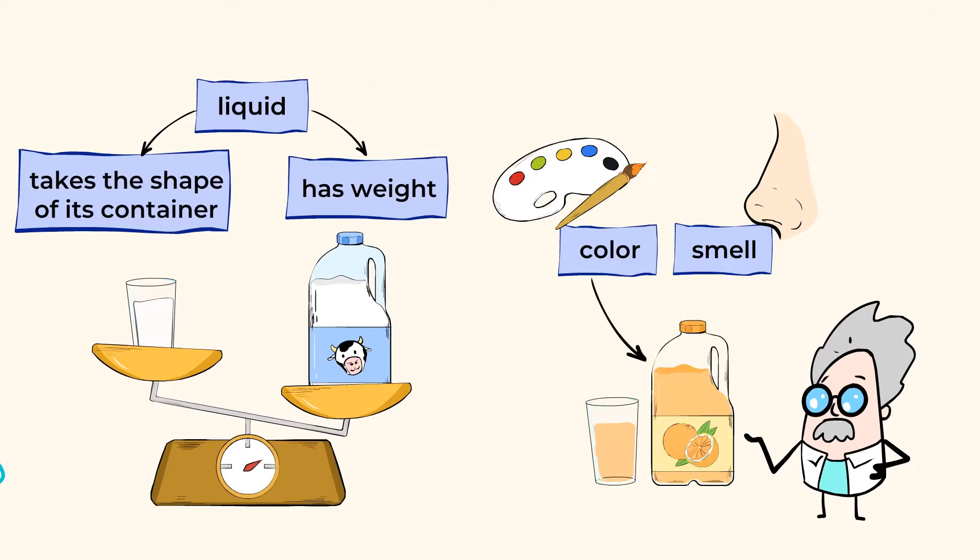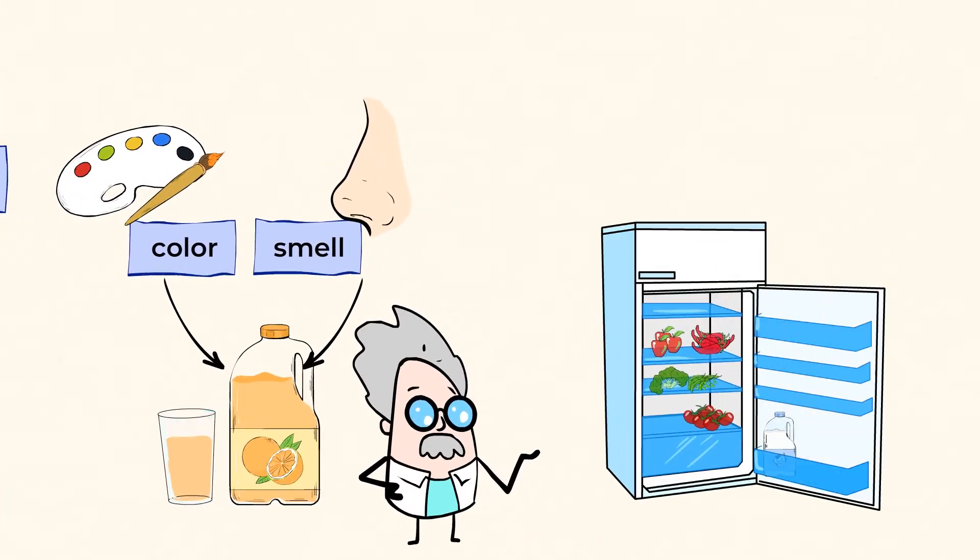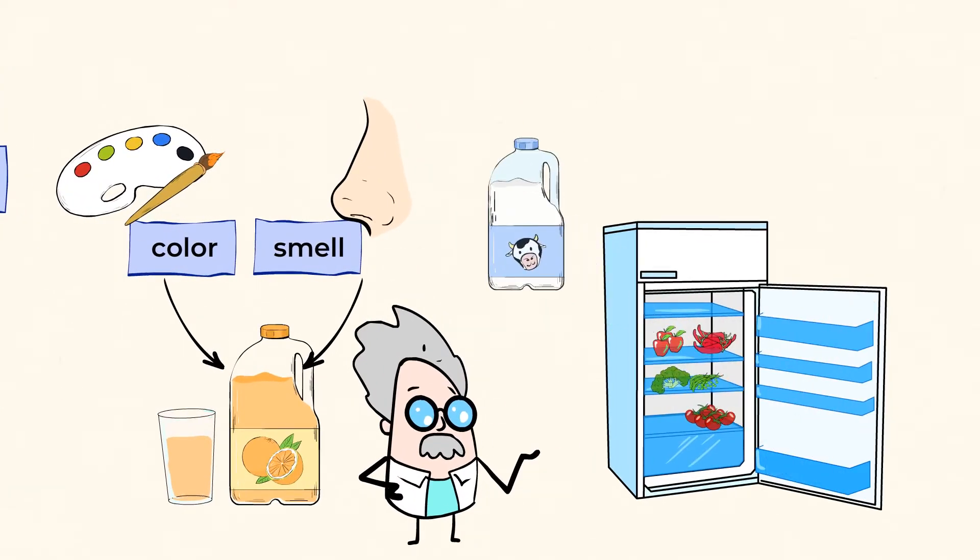And they also have color and smell. Orange juice has an orange color, and it smells sweet. Mmm, yummy. But don't leave your milk out of the fridge for too long, as it would go bad and have a pretty unpleasant rotten smell. Yikes!